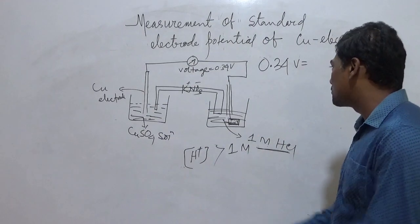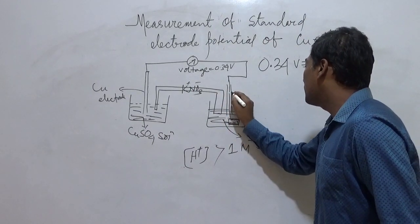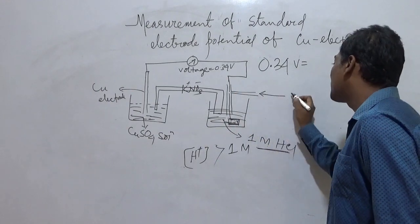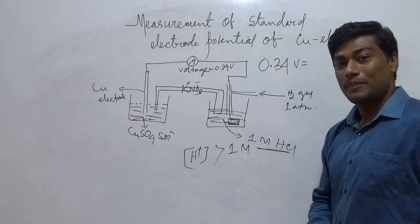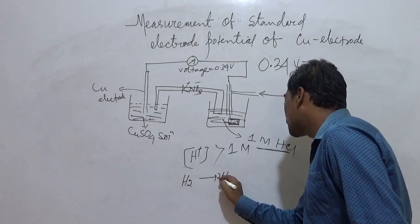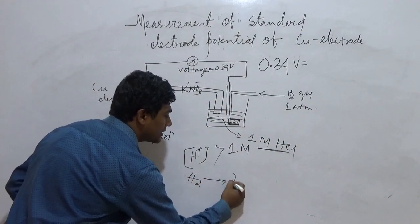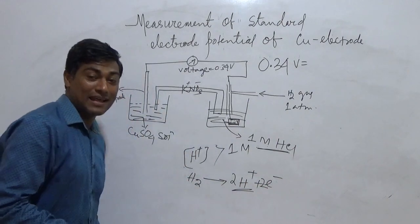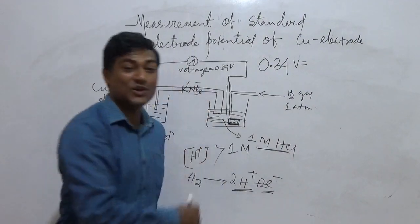How is it being produced? Because the hydrogen in SHE, you are supplying hydrogen gas at 1 atm. That hydrogen gas is now decomposing to give 2H plus ions. That hydrogen gas is giving you 2H plus plus 2 electrons. In this manner, hydrogen ions are produced and electrons are produced.